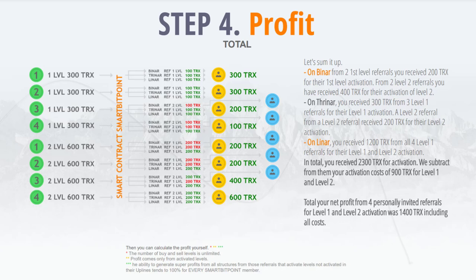Referral number 4 paid 300 TRX to register. In binary, it goes to the level below and stands under your first-level referral in the second free place out of 2 (overflow) — you get nothing, only your first-level referral gets 100 TRX. In trinary, all 3 seats are occupied; it moves lower and stands under your first-level referral — you get nothing, only your first-level referral gets 100 TRX. In Lina, the third free place from unlimited — you get 100 TRX. Total: you get 100 TRX. Total income: 900 TRX.